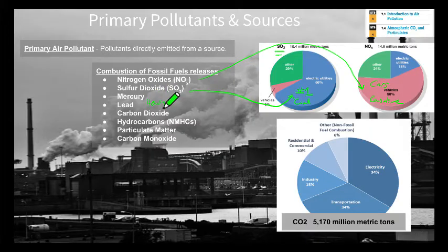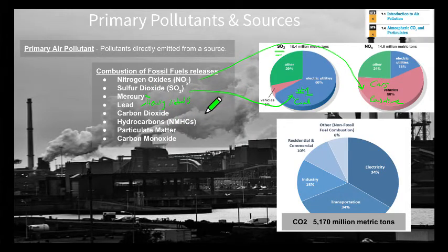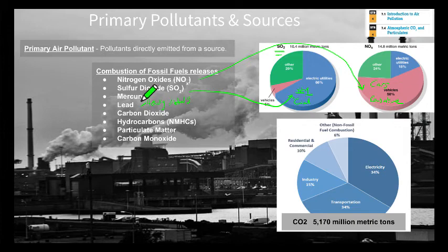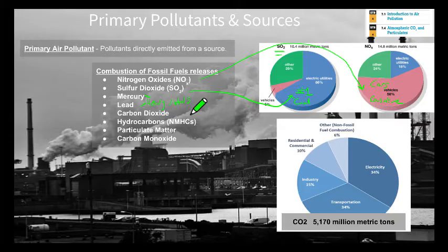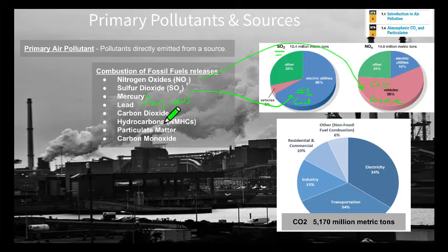We've discussed mercury and lead's impact as pollutants in aquatic ecosystems, and now we'll look at how they affect human health and how they get into the environment. Burning of coal in particular is how they can enter the environment. Mercury can be a powerful neurotoxin and can affect our nervous system. Lead is in the same category, and these things can get into the environment and persist for a long period of time.